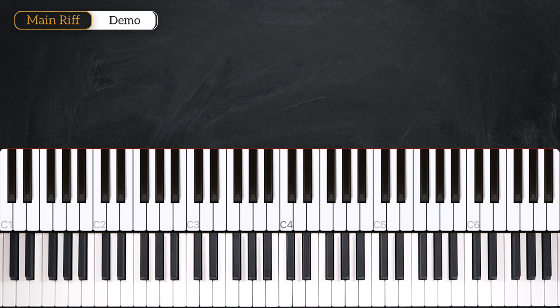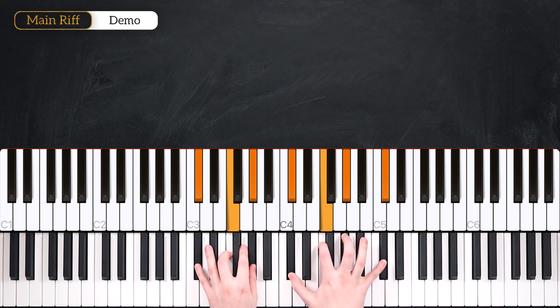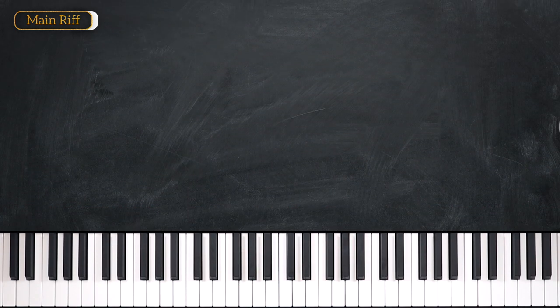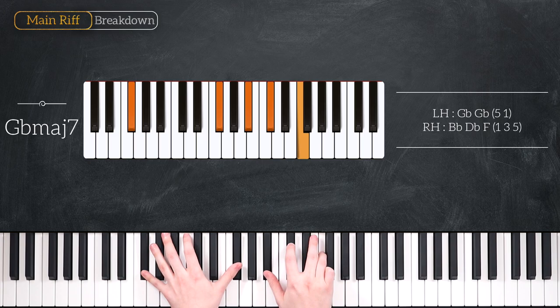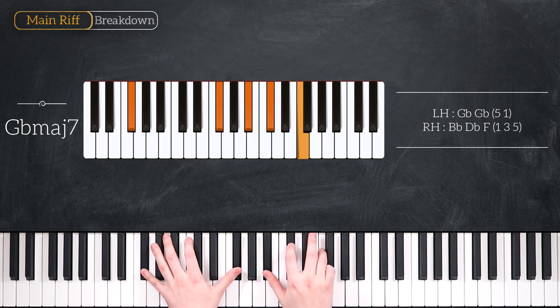Let's get straight into the breakdown. We're in the key of Db major and we have three main chords to look at. Our first chord is a Gb major 7 chord, that's octave Gb in the bass, a Bb, a Db and an F natural in the right hand.